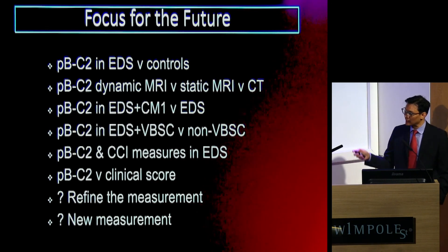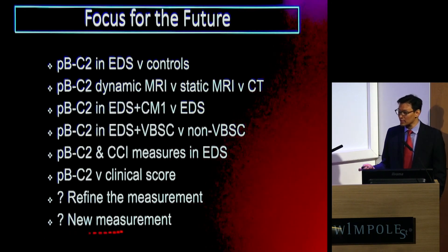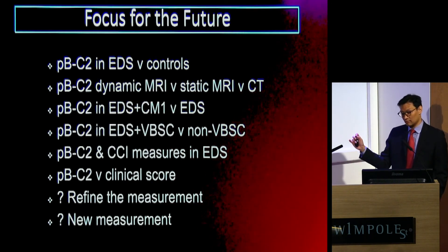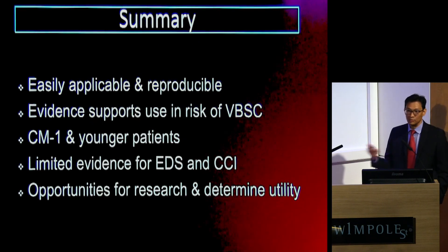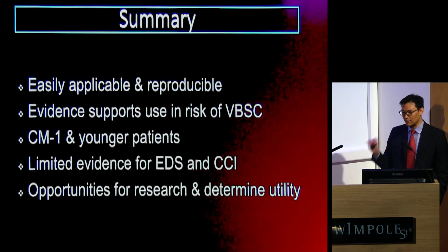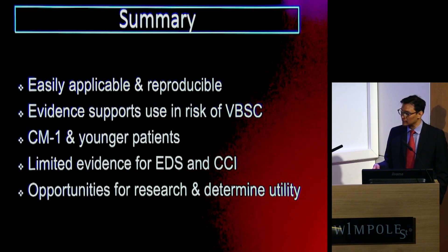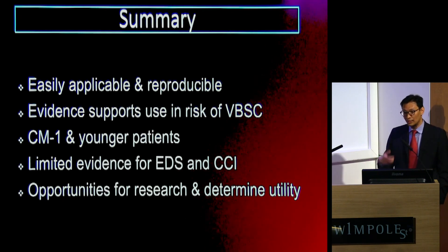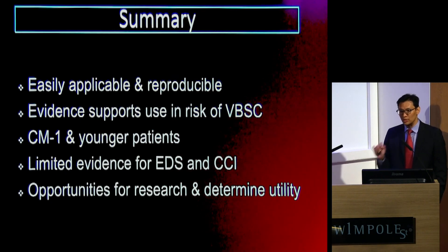That's really where there is room to manoeuvre in terms of research, and I think that's where the real thrust should be. At the end of this process, do we need to refine the measurement? Or in the worst case scenario, do we need to discard it and say it's not fit for purpose in this particular category of patients — it's useful in Chiari-1 malformation patients in the paediatric age group, but do we need to think about something else? It clearly is quite easily applicable and reproducible, but the evidence supports its use for stratifying risk of ventral brainstem compression in Chiari-1 malformation patients in the younger age group. At present there is limited evidence for its utility in EDS and cranioservical instability, and that's where the opportunities for further research to determine its true utility come.